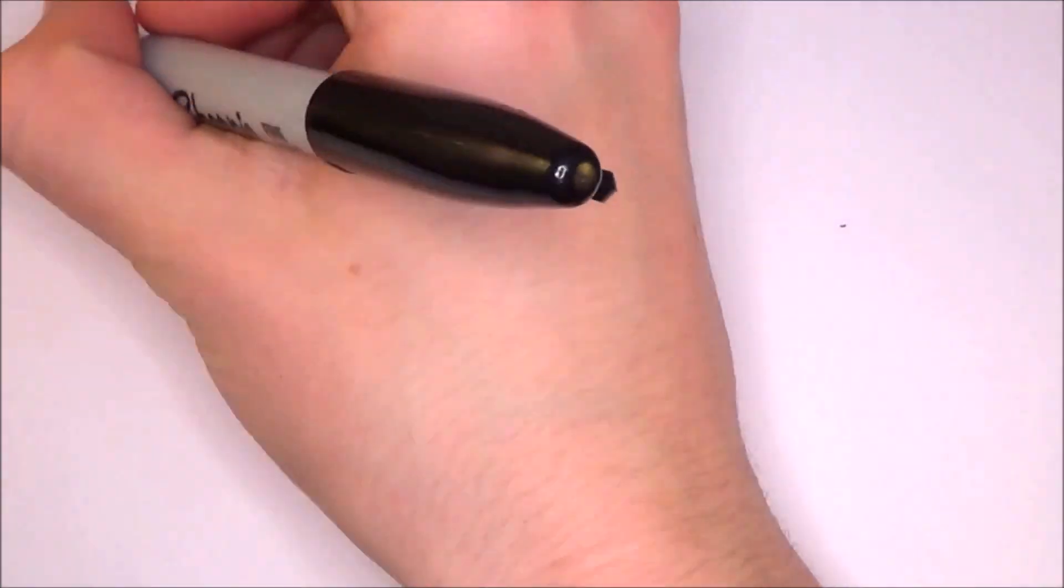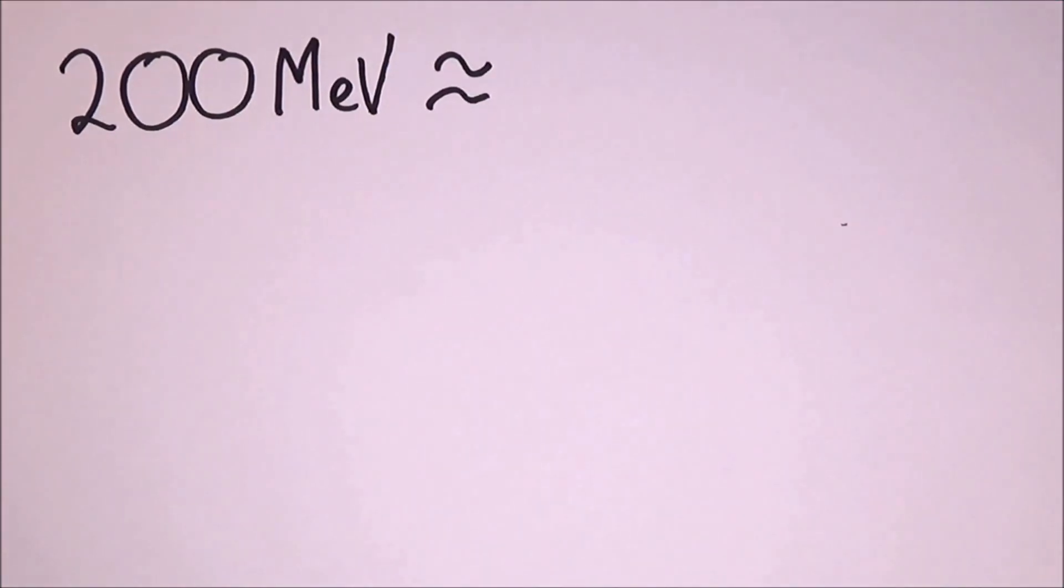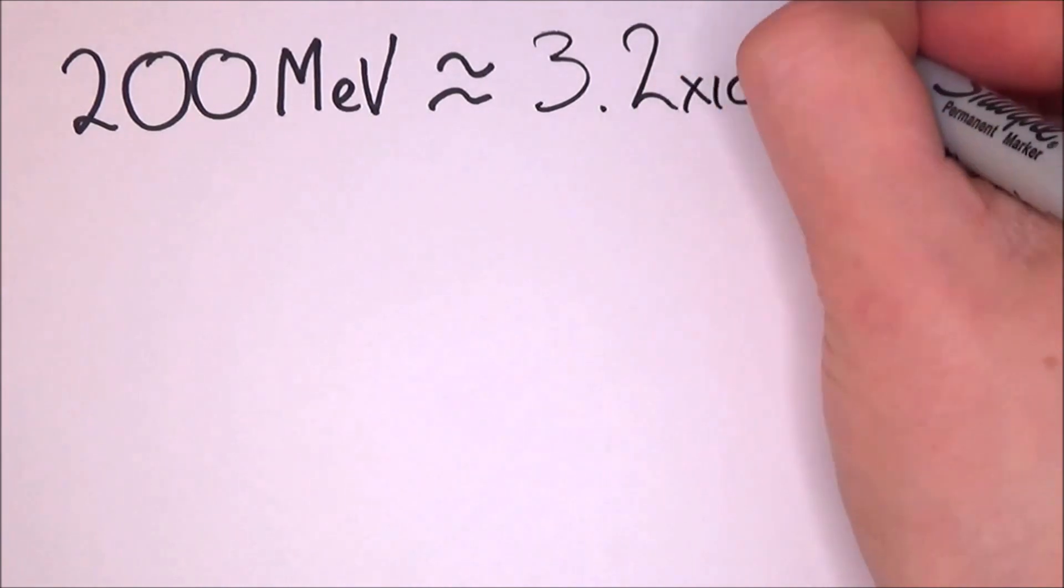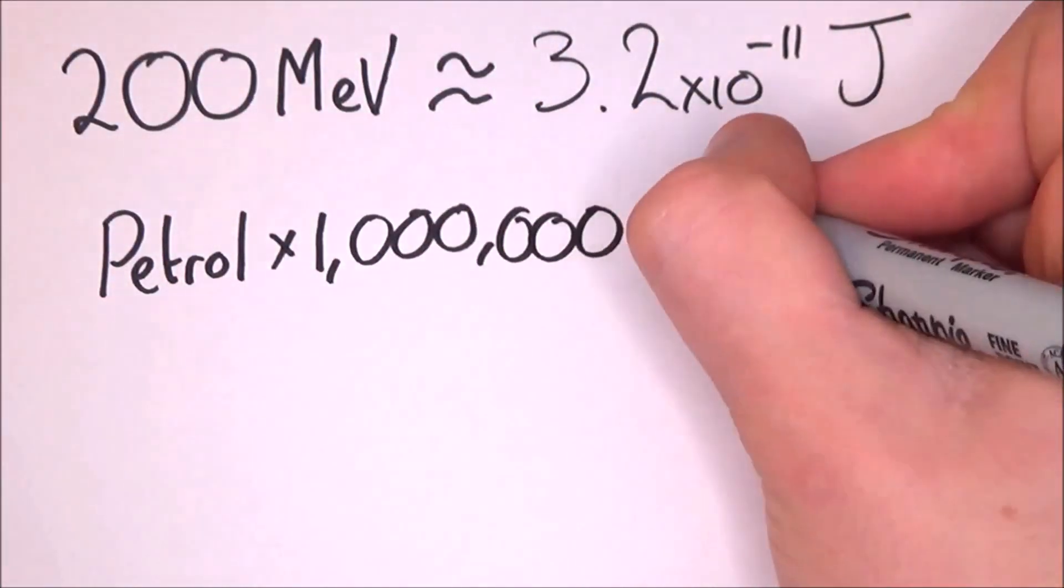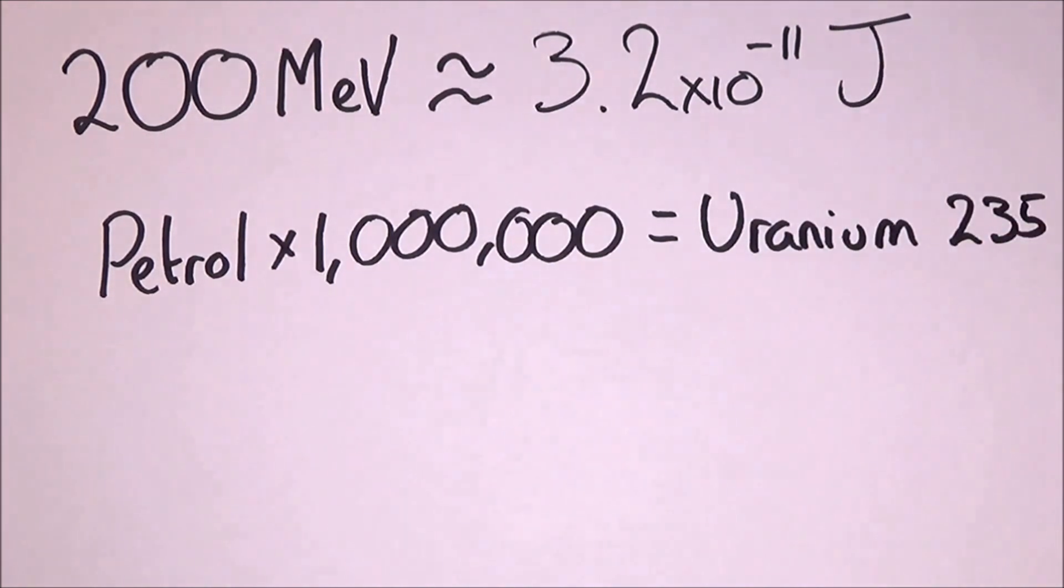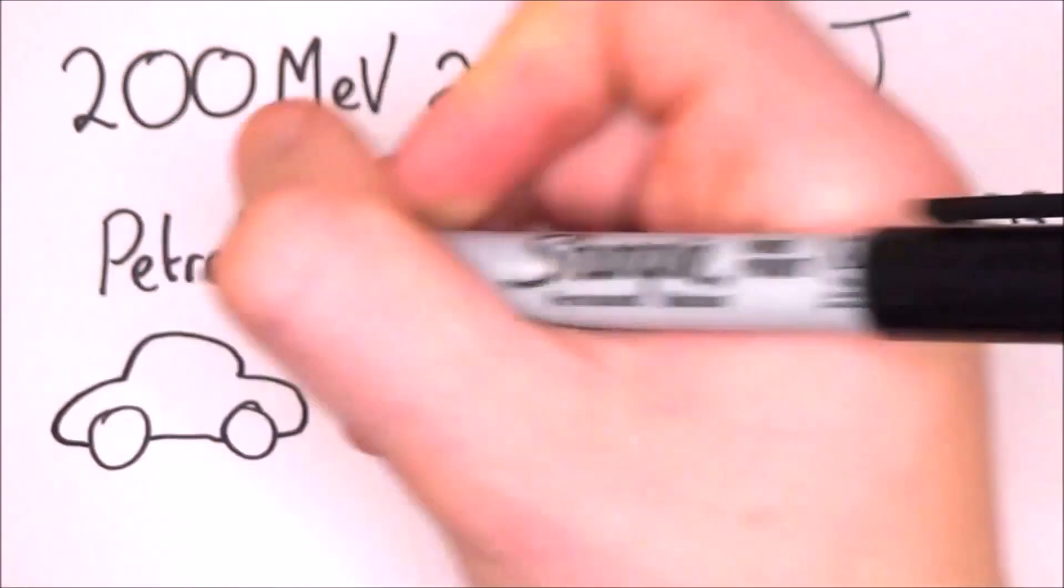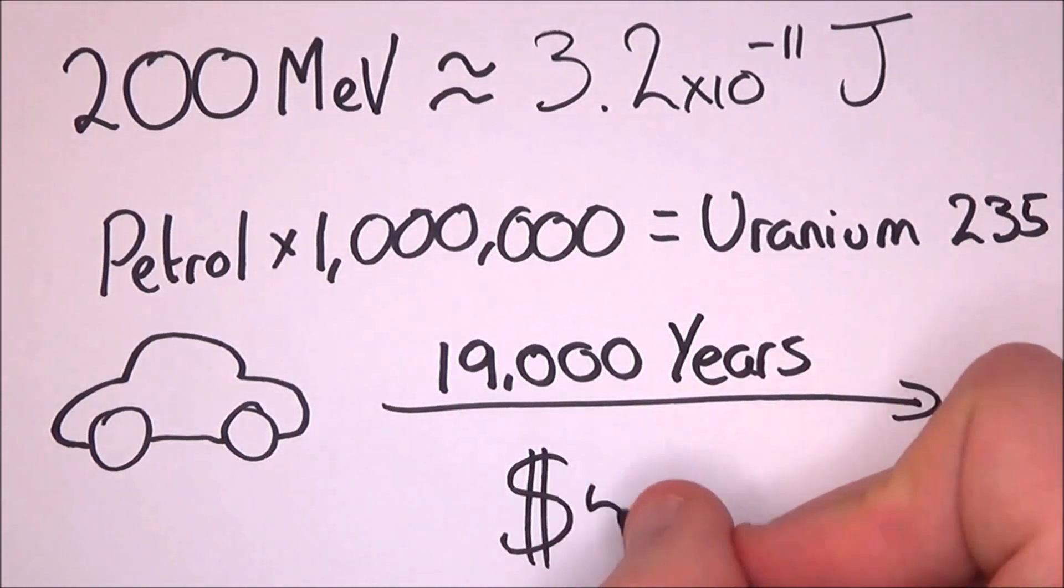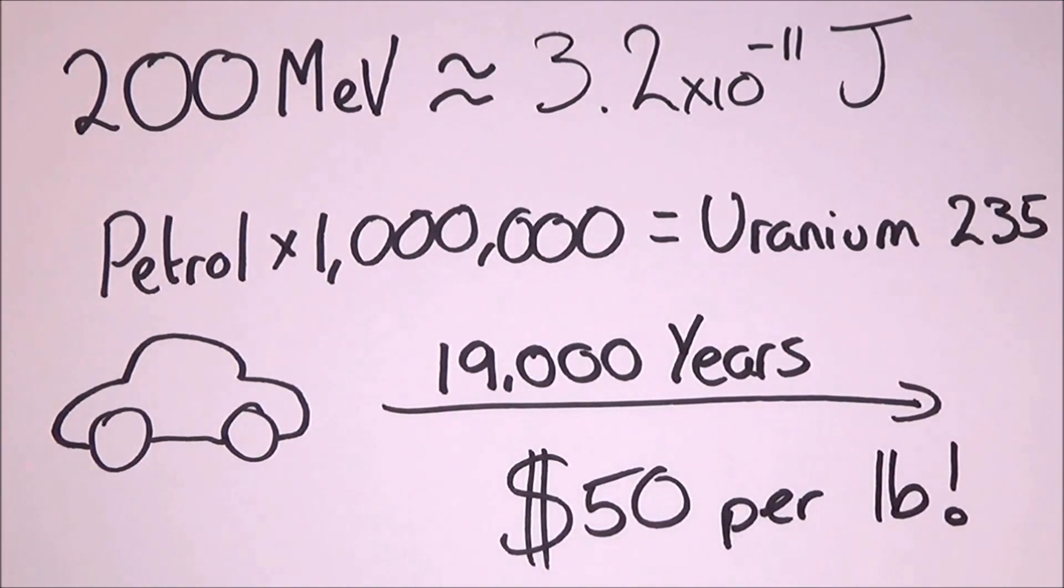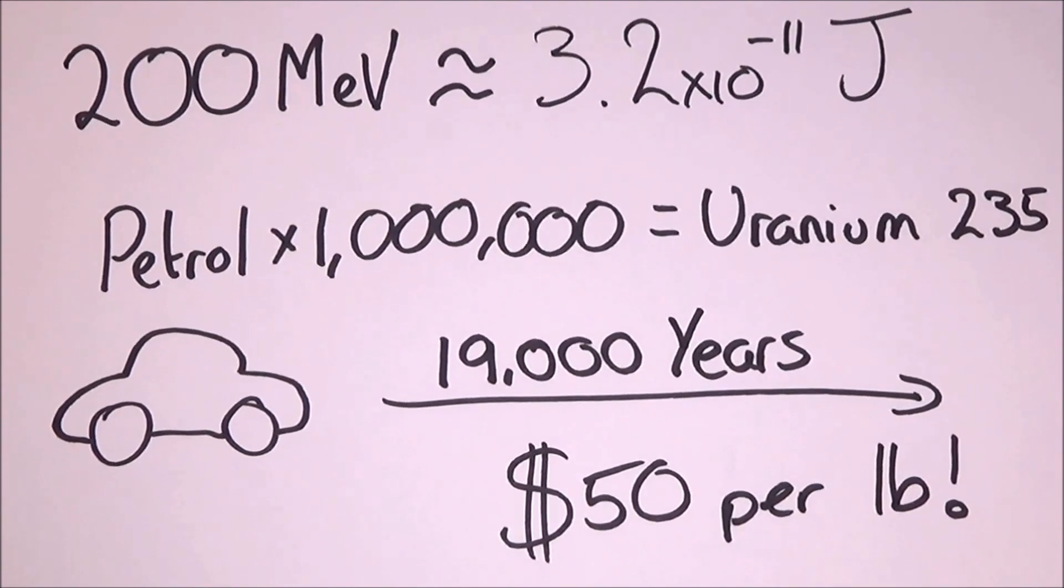Now 200 mega electron volts is equal to about 3.2 times 10 to the minus 11 joules. That may sound small, but it is millions of times better than petrol. If you are to fill up your car with petrol once a week, you could use uranium-235 instead and it would go for 19,000 years. At about 50 odd dollars for a pound of uranium-235, that ain't bad.